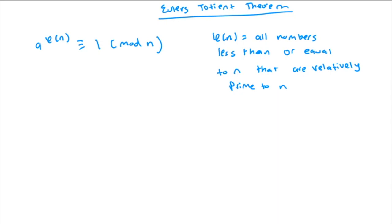It states a to the power of phi of n is congruent to 1 mod n. Where this symbol here stands for phi. And what phi of n over here is, is all of the numbers less than or equal to n that are relatively prime to n. And the reason why we have this is it looks pretty similar to Fermat's Totient theorem.